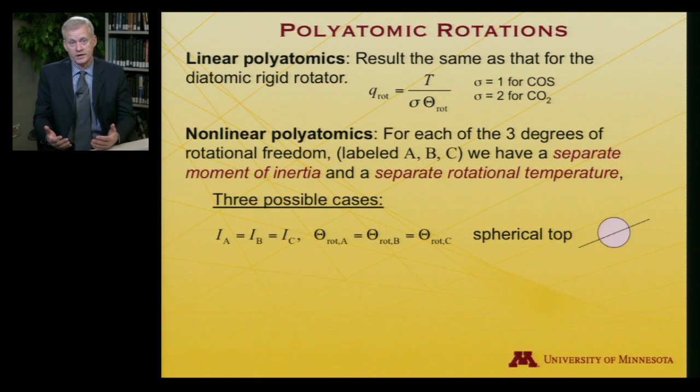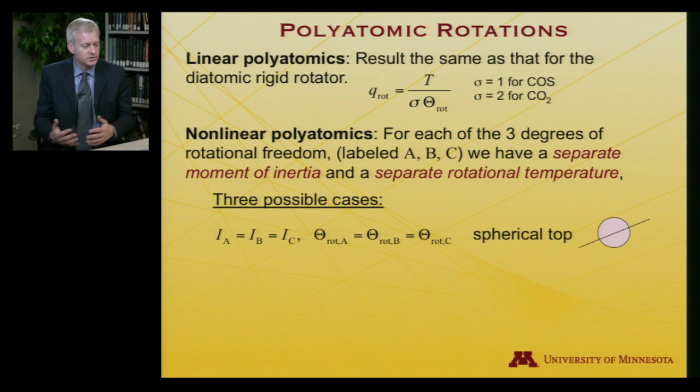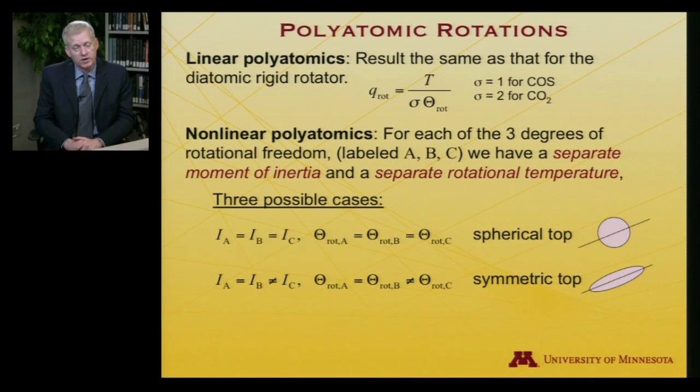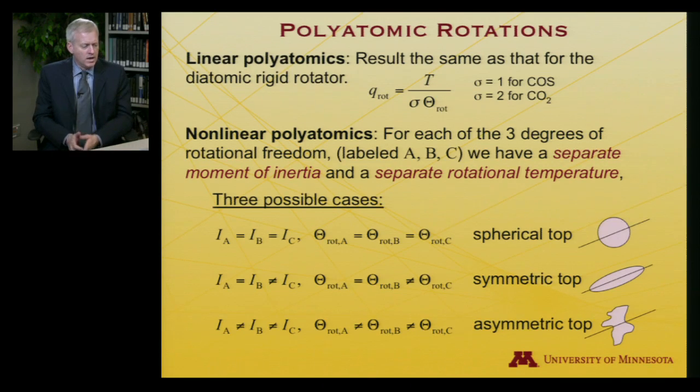And given that there are three of them, there are sort of three possibilities. Either, they're all equal to one another. When that happens, we have equivalent rotational temperatures. So if the moments of inertia are the same, the rotational temperatures are the same. And the name for that is a spherical top. Obviously, the next possible case is that two of them are the same, and one of them is different. And that, too, has a special name that's known as a symmetric top. And finally, the last case is that none of them are equal one to another, in which case they all have different moments of inertia, different rotational temperatures, and that is called an asymmetric top.